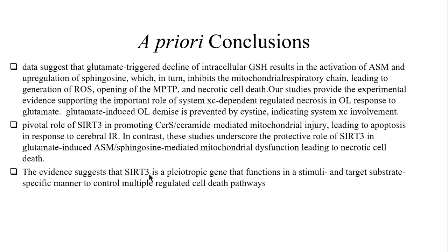The studies provide experimental evidence supporting the important role of System XC, where cystine is imported and glutamate is exported out of the cell — specifically oligodendrocytes, which are dedicated to a neural system that becomes neurodegenerative in Alzheimer's disease and other CNS neurodegenerations. System XC regulates necrosis in oligodendrocytes in response to exogenous glutamic acid; glutamate-induced oligodendrocyte demise is prevented by cystine, indicating System XC involvement.